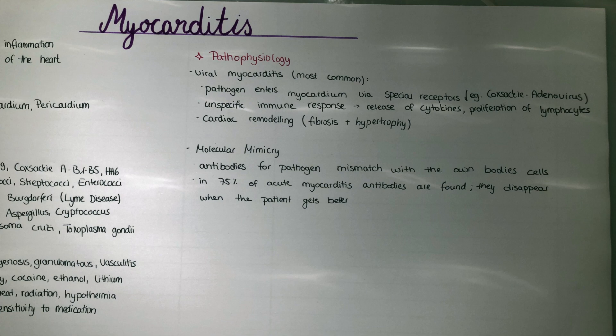In around 75 percent of acute myocarditis cases, antibodies are found within the cells of the heart and later disappear when the patient recovers. In chronic myocarditis, autoantibodies can even be generated against the beta-1 adrenergic receptors.